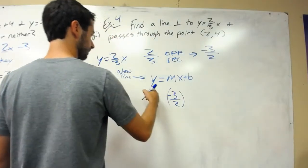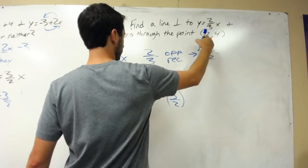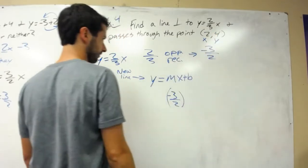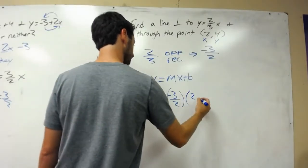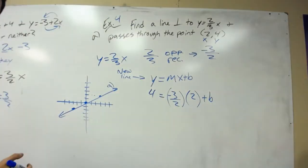Do we know y and x? Yes, we do. We know a coordinate on the line. So x is 2, y is 4. I plug in 4 for y, 2 for x, plus b.